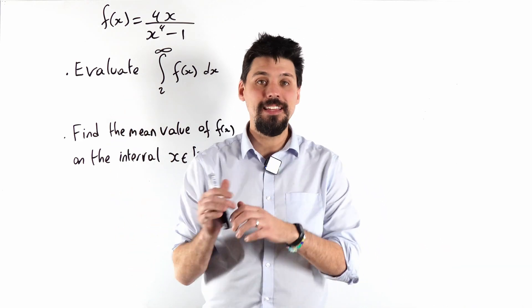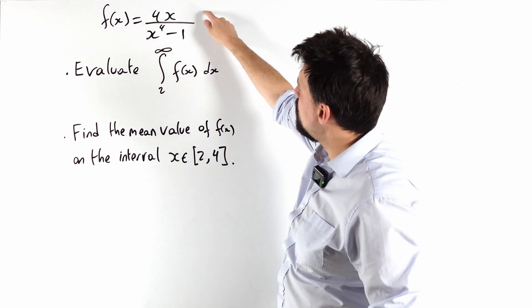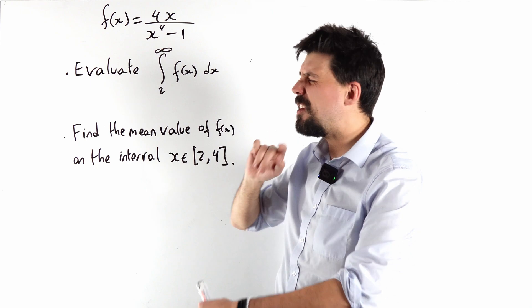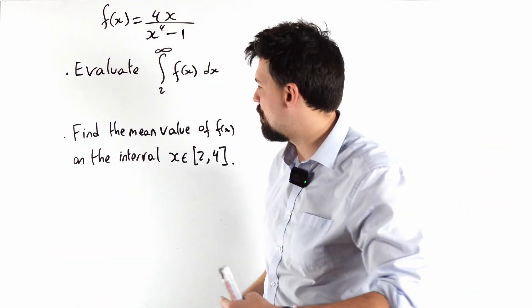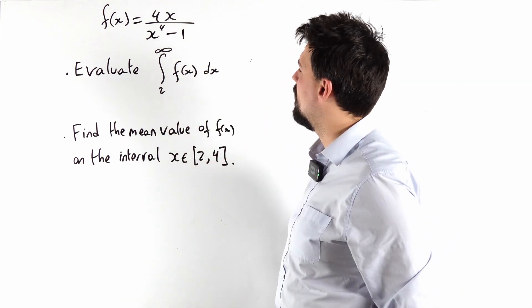Let's do an improper integral. So this is our function and we're going to find the improper integral from 2 to infinity and we're going to do it properly with limits and everything. We're not going to do what I normally do and just think of infinity as something I can whack in and call it a day.